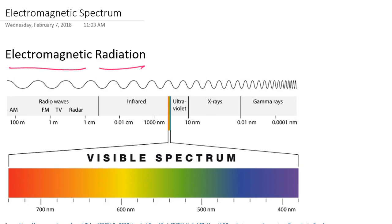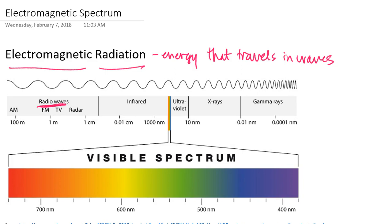Electromagnetic radiation is basically any form of energy that travels in waves. It can consist of radio waves, which are the lowest energy type of electromagnetic radiation, all the way up to gamma rays, which are the most energetic types of electromagnetic radiation. But each of these types of energy can be represented by waves, so we have to consider waves and their parts and how we relate the different parts to each other.